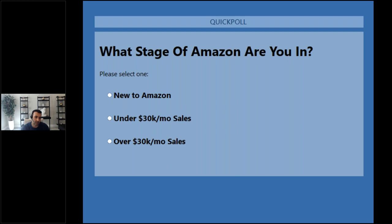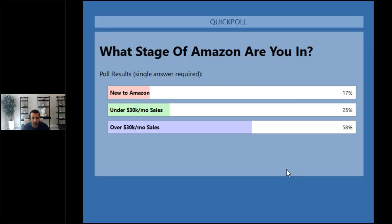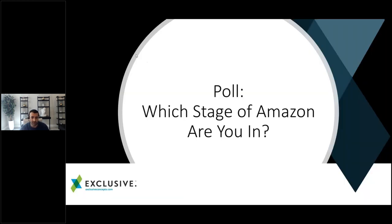Most of you are well over 30K per month — that's fantastic. But think critically about revisiting steps you may have skipped while pursuing dominance. 25% of you are on your path to 30K, and 17% are just starting out trying to figure out what Amazon will look like for you. Let's talk about sales velocity and break this down into steps.